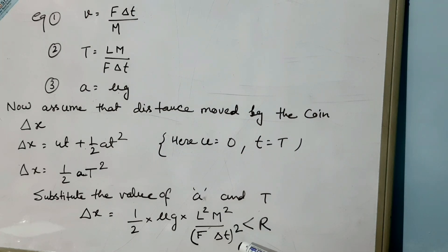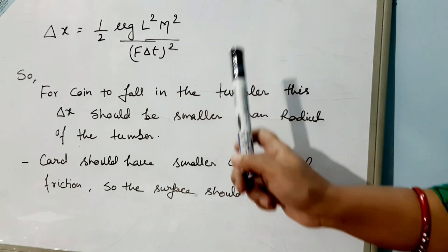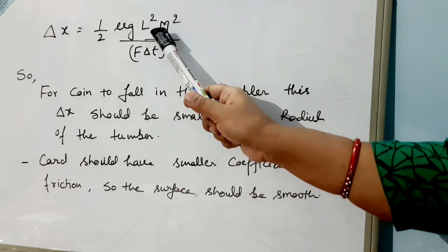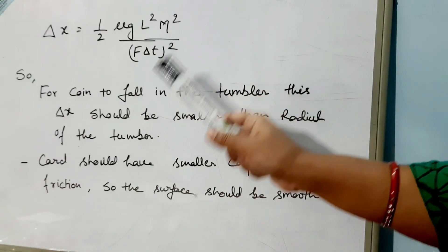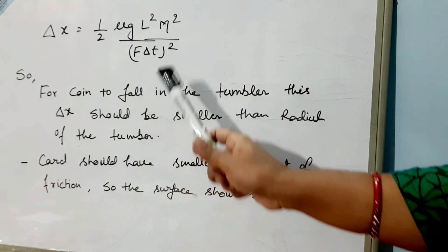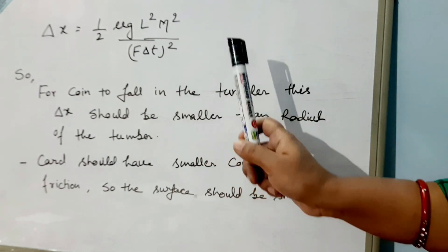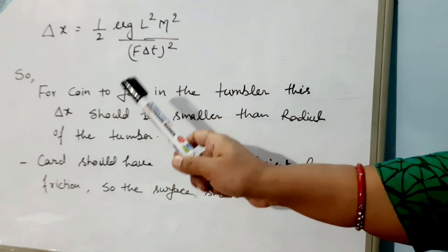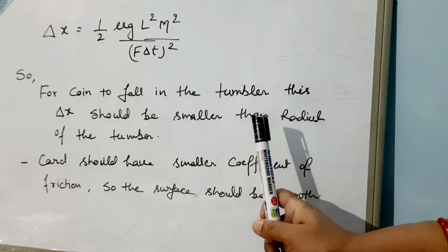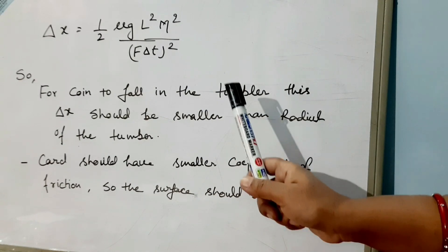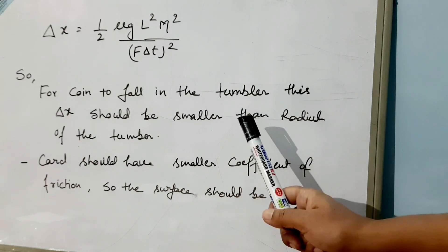These are the factors which affect it: coefficient of friction, length of the card, mass of the card, force applied, and the duration of flicking. But among all these, the most important thing is that Δx should be lesser than the radius of the tumbler. Then only the coin will fall inside the tumbler.